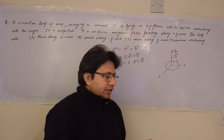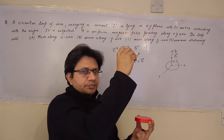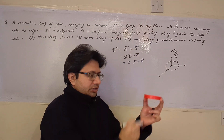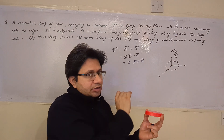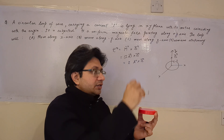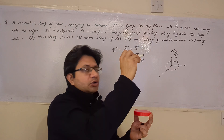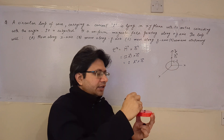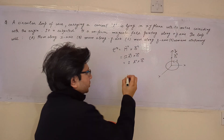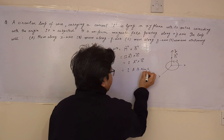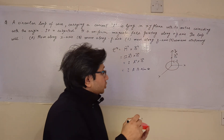Now, A is the area vector. For a circular loop, the area vector is perpendicular to the plane of the loop — either upward or downward along z, depending on the direction of current. Suppose the current is such that the area vector is in the positive z-direction. Then the angle between the area vector and the magnetic field is 0°. The formula becomes τ = iAB sin θ, and sin 0° = 0.